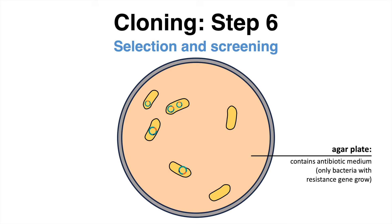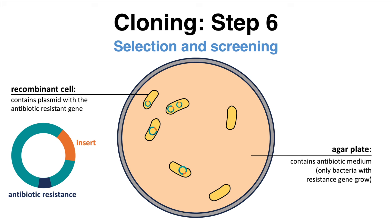To identify the cells that have successfully taken up the recombinant DNA, scientists employ selection markers such as antibiotic resistance genes. Cells that have taken up a recombinant DNA harboring the resistance gene will survive and grow in the presence of a specific antibiotic, whereas non-transformed cells will perish.